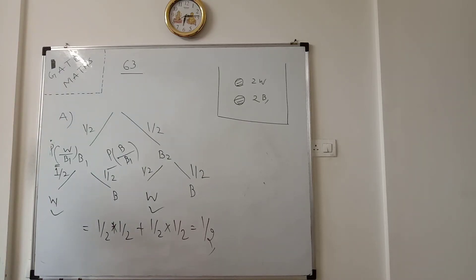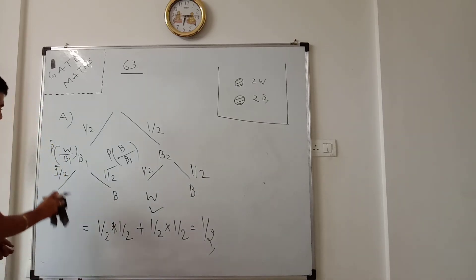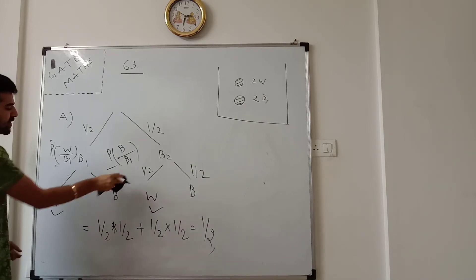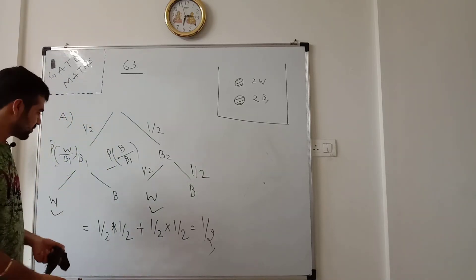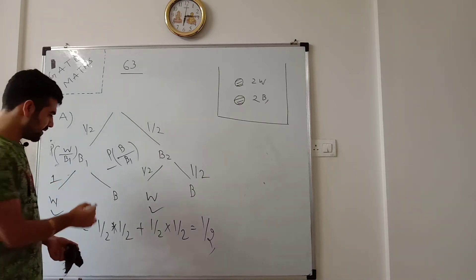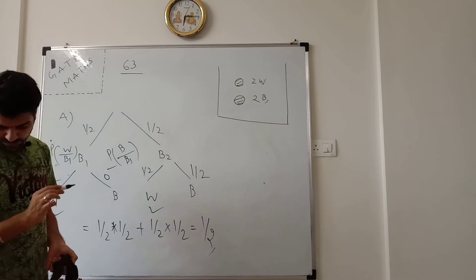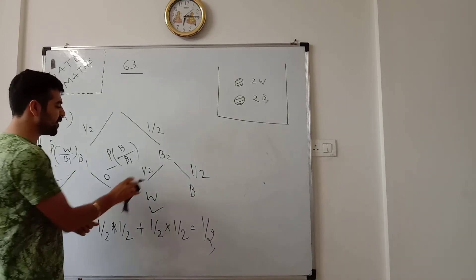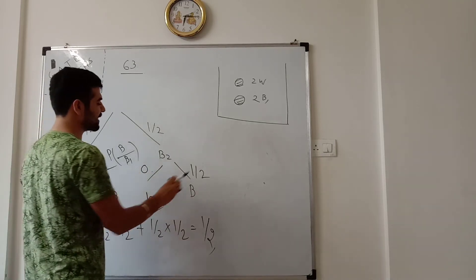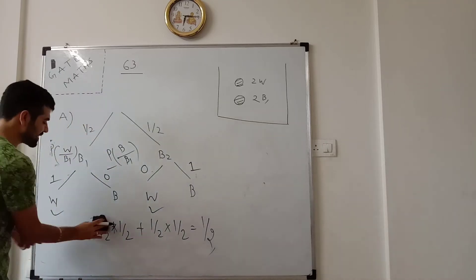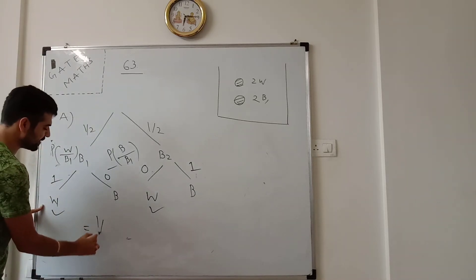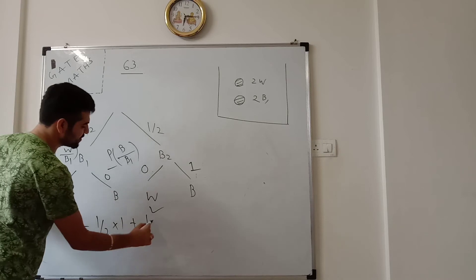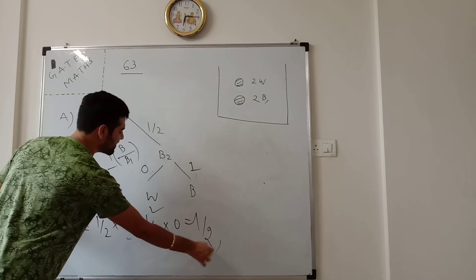Option B: bin 1 has two white balls, so the chance of white is 100% — that is 2/2 equals 1, and chance of black is 0. Bin 2 has two black balls, so white ball probability is 0 and black ball is 1. So probability of white ball equals half into 1 plus half into 0, which equals 1/2. So option B also gives half.